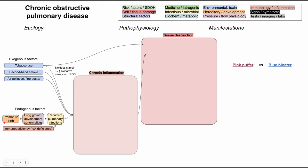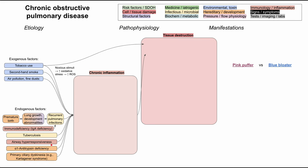Lung growth abnormalities typically follow premature birth, where the baby was born too early and the lungs were not fully developed. Tuberculosis is one such pulmonary infection — recurrent or chronic tuberculosis can cause levels of inflammation that cause COPD. Airway responsiveness can also predispose you to chronic inflammation that causes COPD, perhaps in line with people that have asthma.